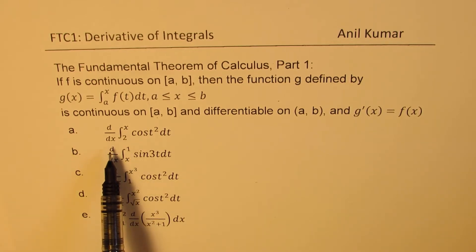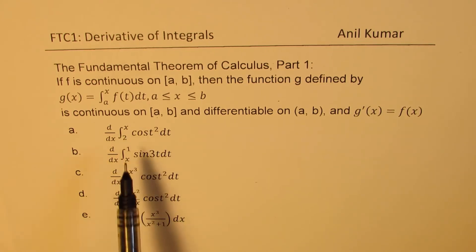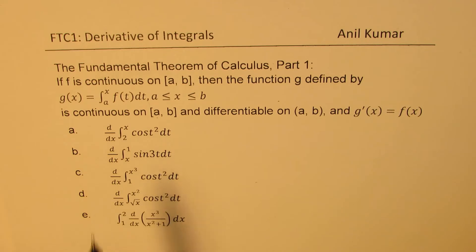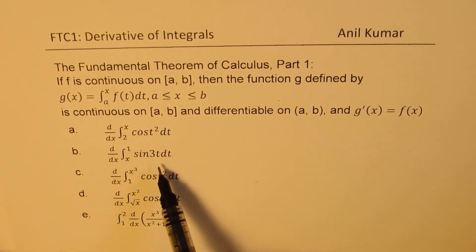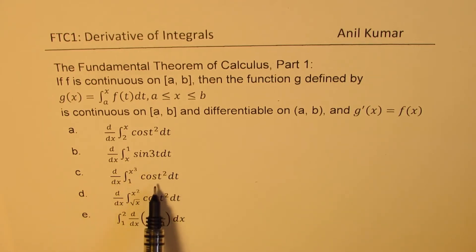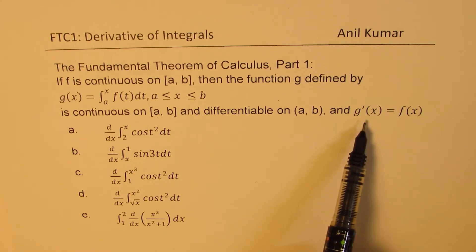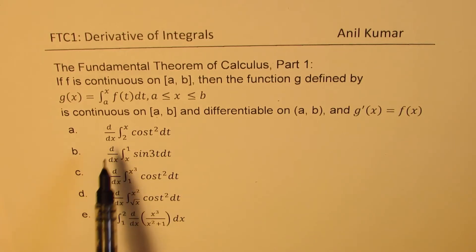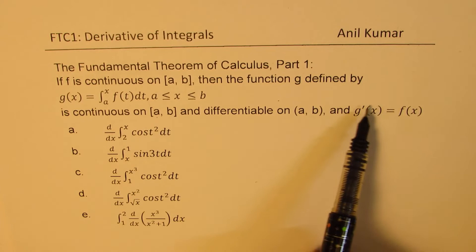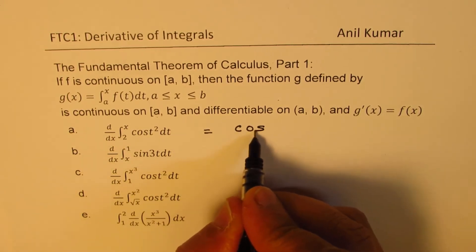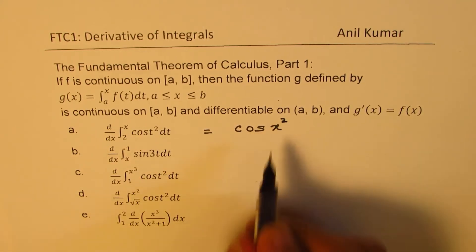The very first one is a straightforward question: d dx of the integral from 2 to x of cos(t²) dt. The function cos(t²) is continuous within the domain 2 to x, and its integral is also continuous on this interval. We can straight away apply the Fundamental Theorem of Calculus. The derivative of this integral is the function f of x, so the answer is cos of x squared.